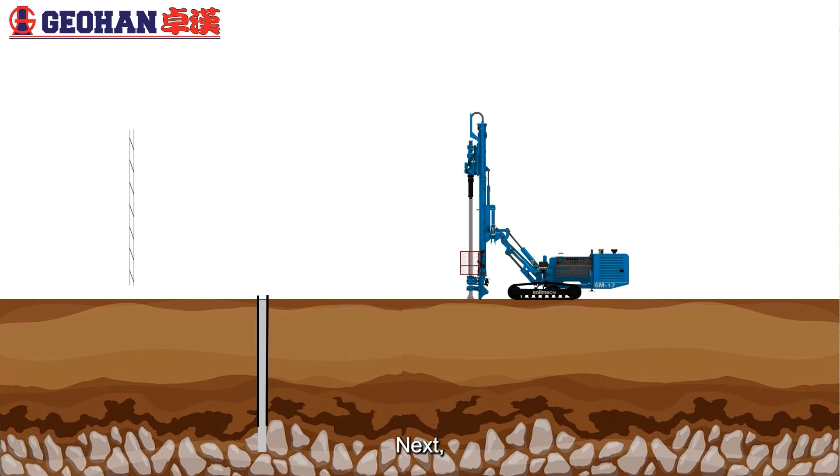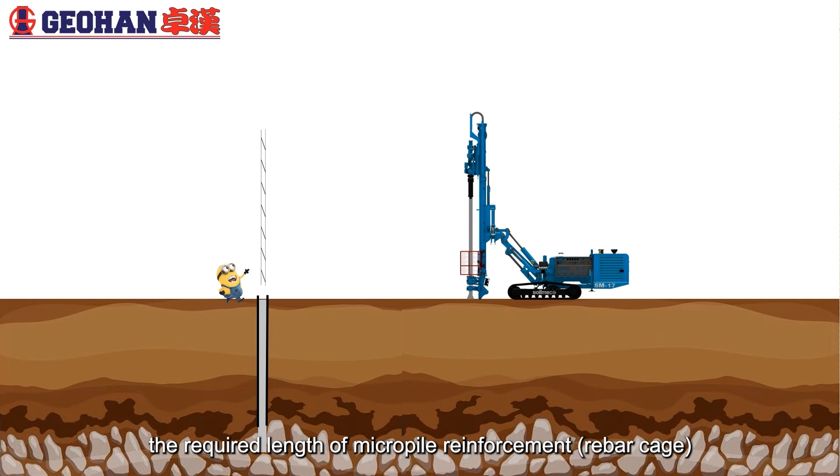Next, the required length of micropile reinforcement, rebar cage, is fabricated according to design requirement. The reinforcement is then lowered to the bottom of drill hole.